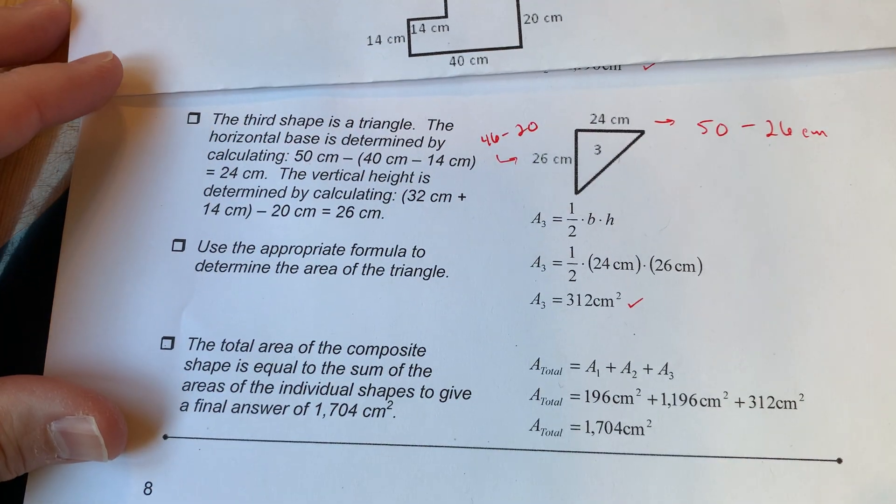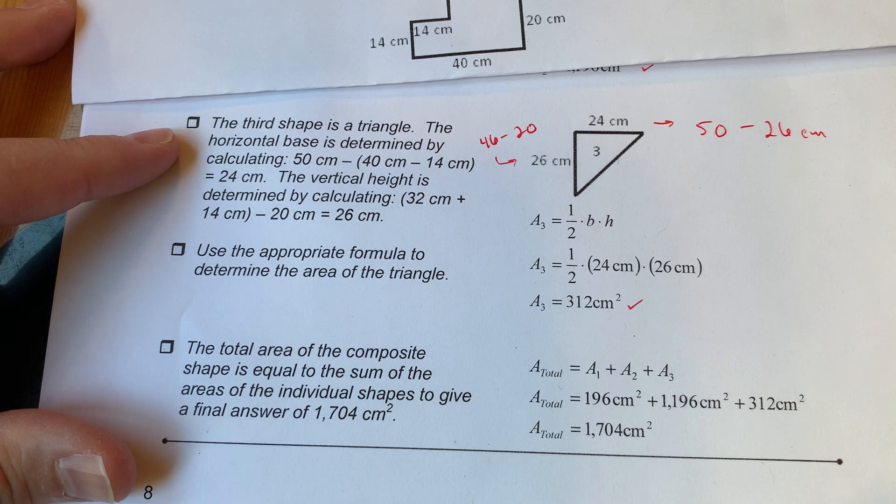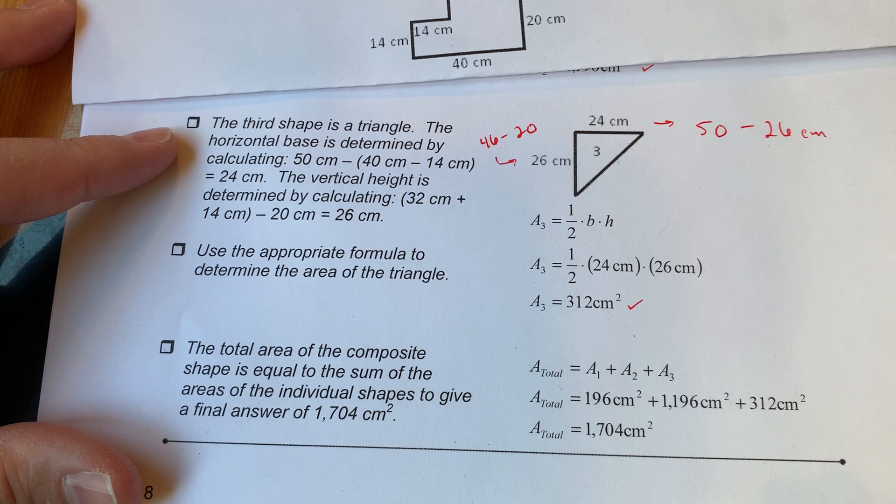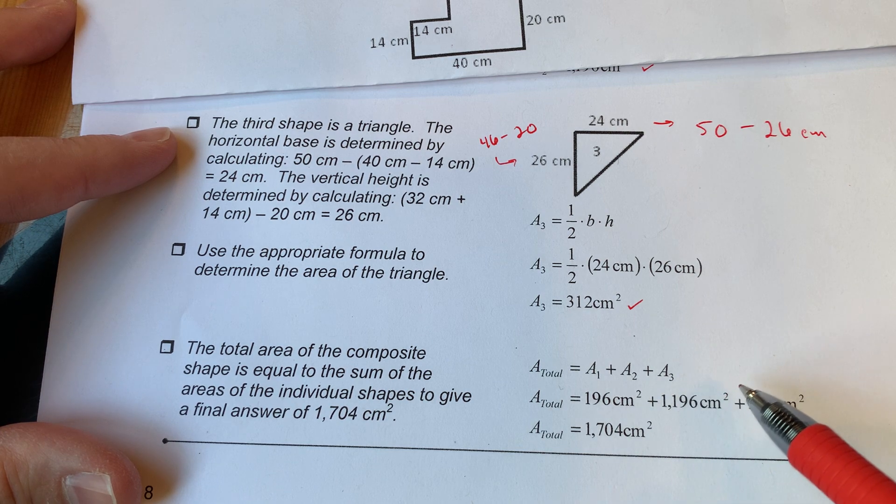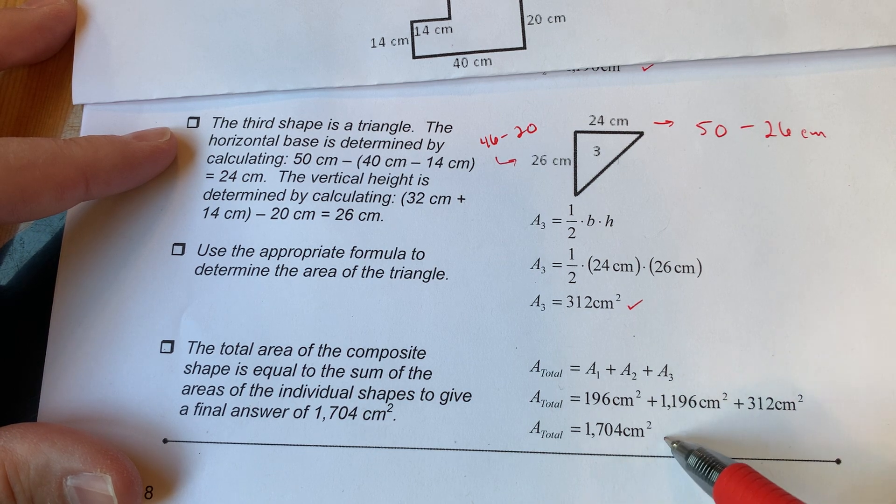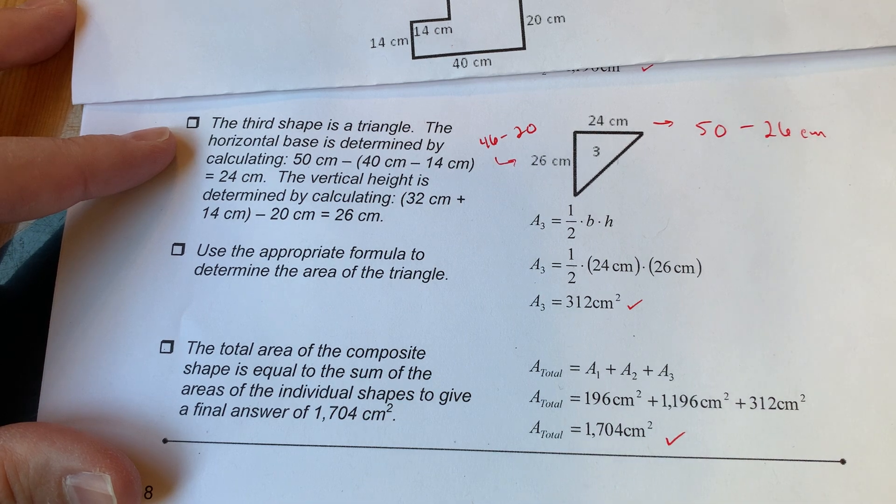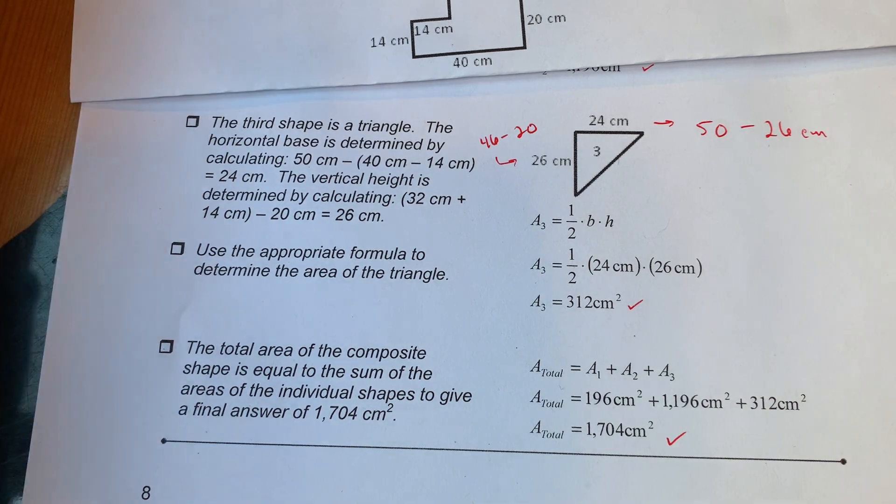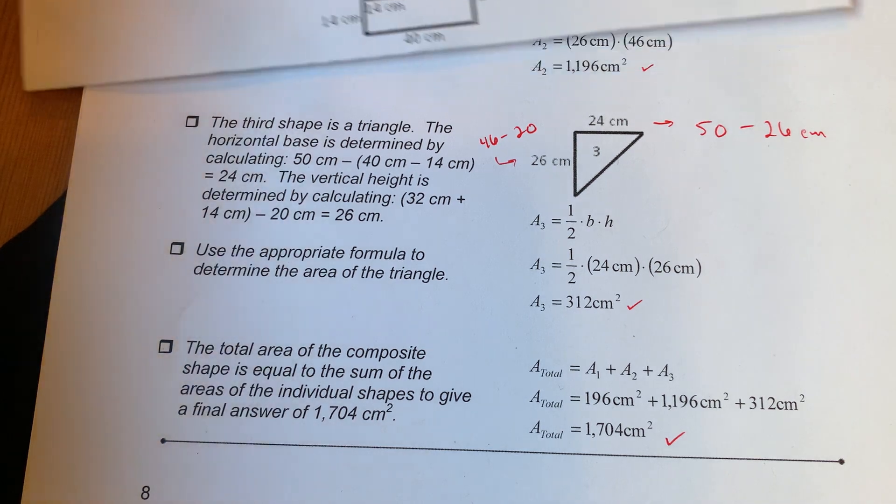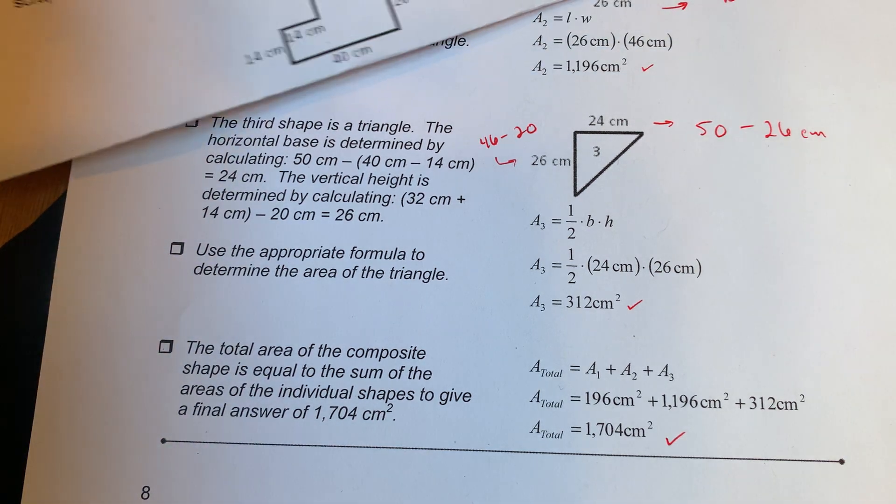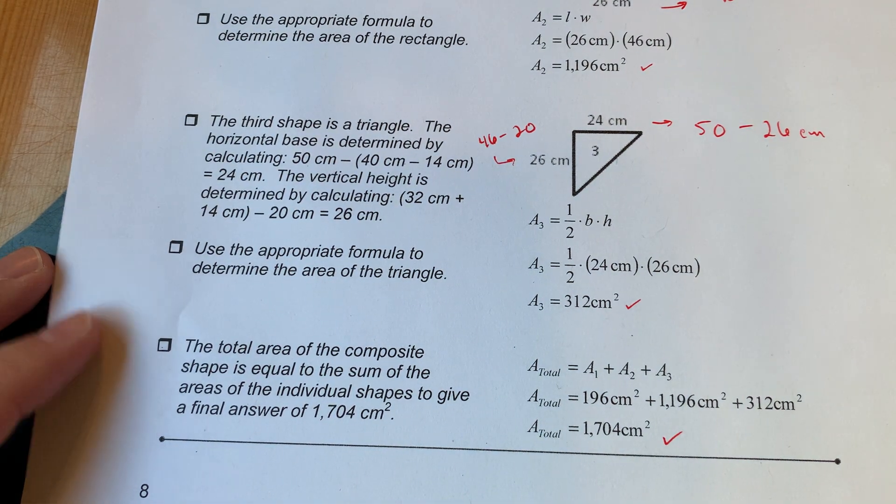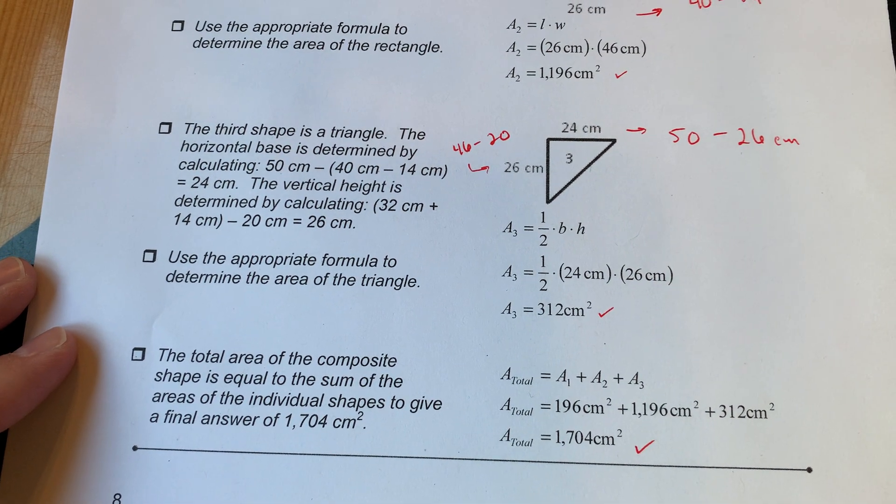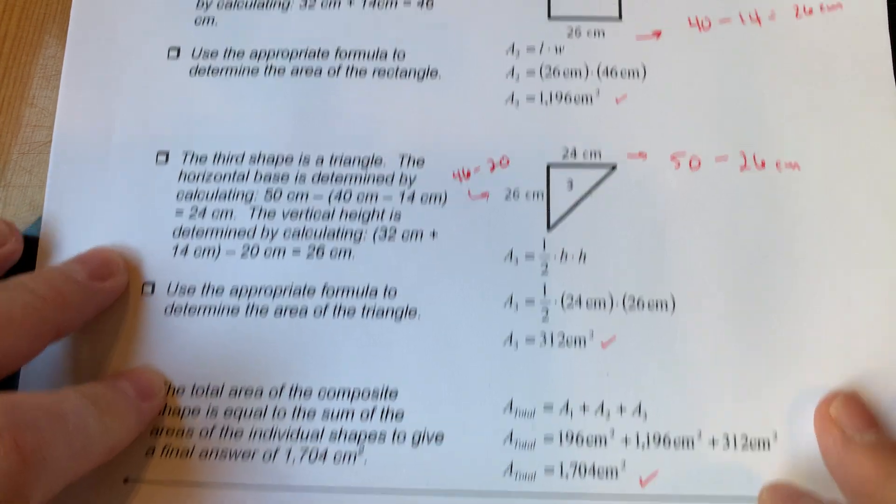What about our total area? The total area then is those three sections all added together: area one, area two, area three. 196 plus 1196 plus 312, so they're going to add up to 1704 squared centimeters. We don't need to change the units - we're just getting squared centimeters and squared centimeters, we're adding them up, we get another squared centimeter.